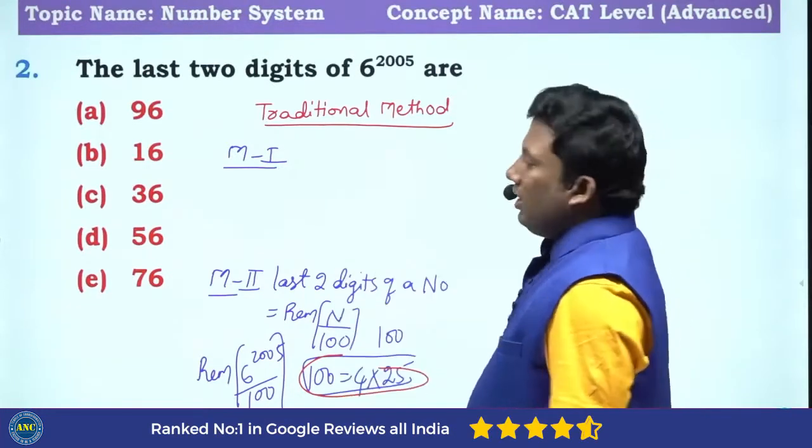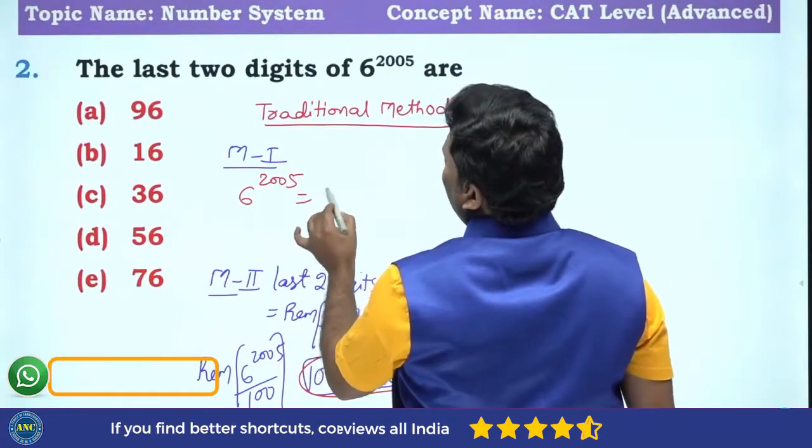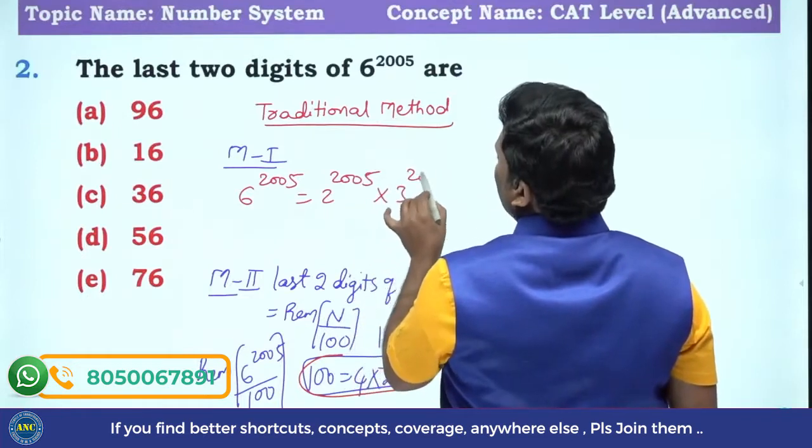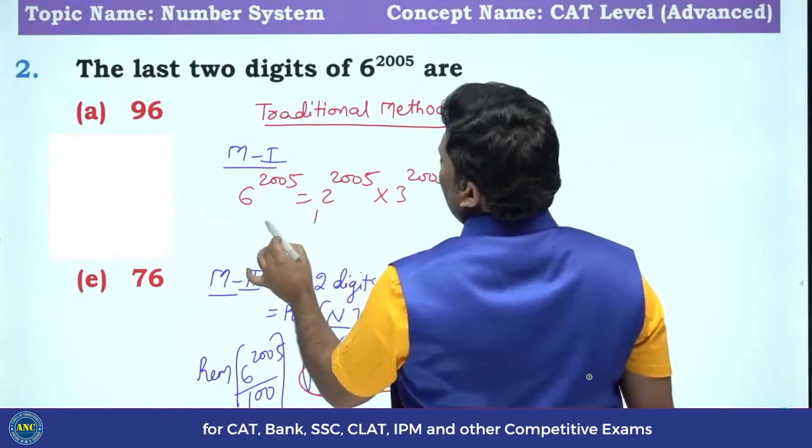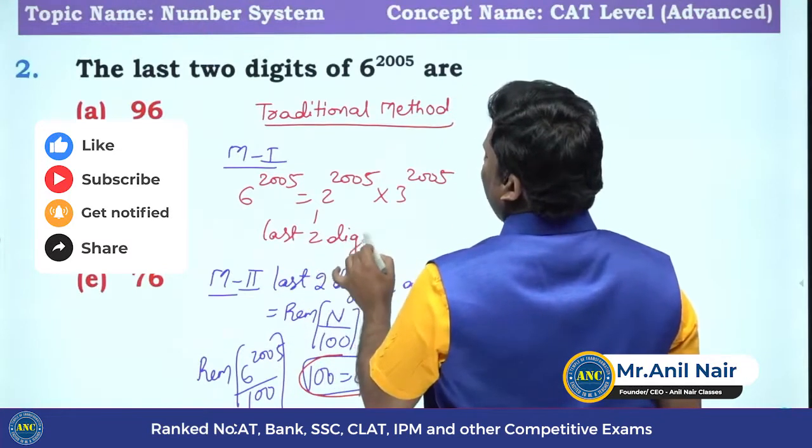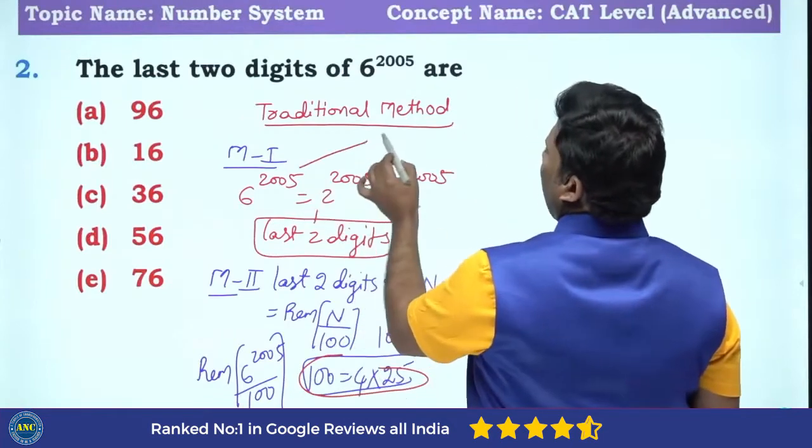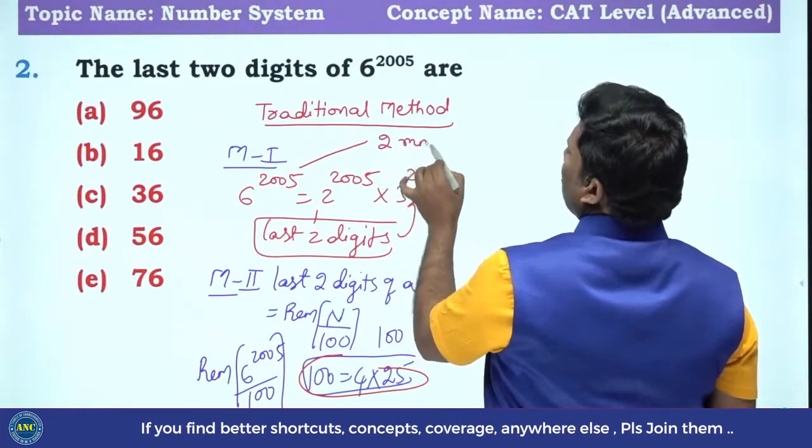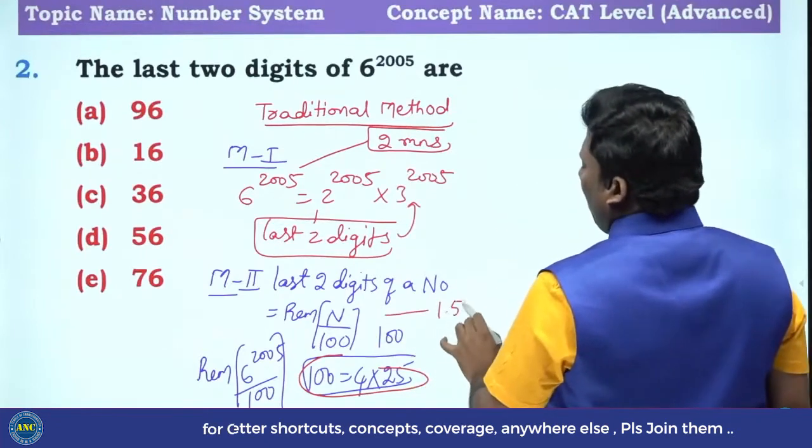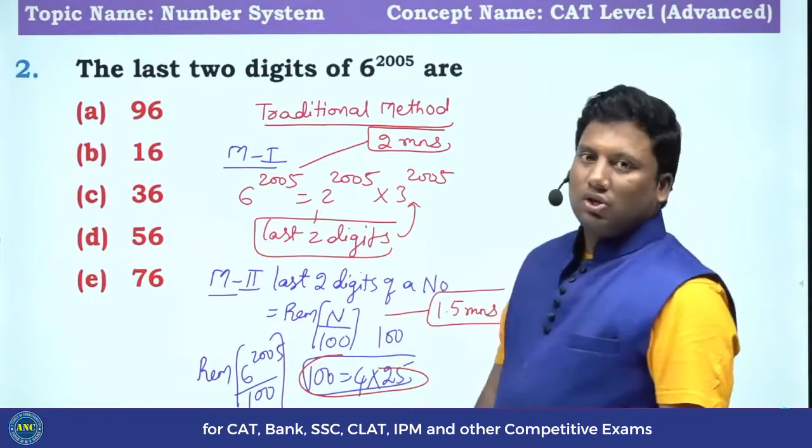The next method which they will do is 6 power 2005. They will factorize into 2 power 2005 and 3 power 2005. They will find out the last two digits for 2 power 2005 and 3 power 2005, and they will multiply it. It takes 2 minutes to solve this question. It also takes around 1.5 minutes to solve this question.